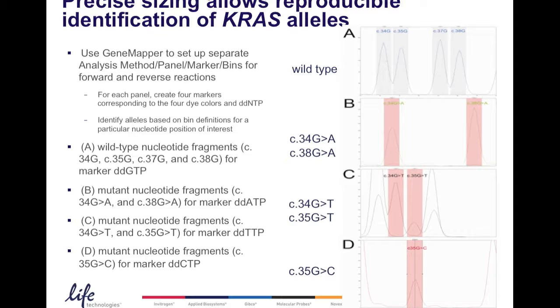In GeneMapper, we can set up bins that detect all these nucleotides at these various positions. Shown here is the wild type: the guanine at position 34, the guanine at position 35, 37, and 38. Here, we have a bin for a mutant position, the 34 G to A transition. And here we have a bin for the c38 G to A transition. Likewise, we can set up bins for all of these possible mutations.